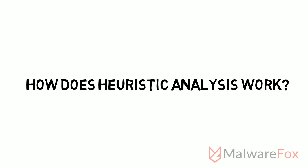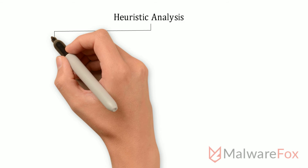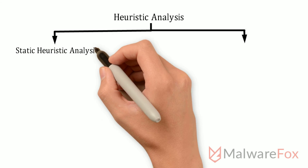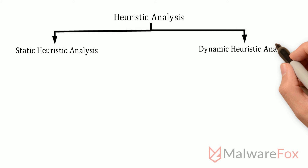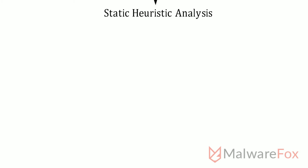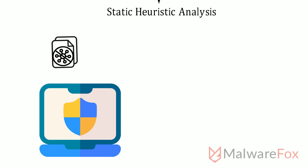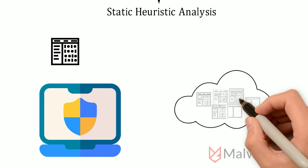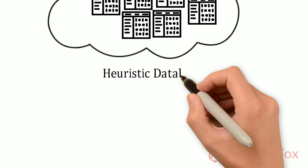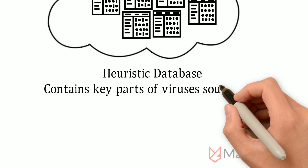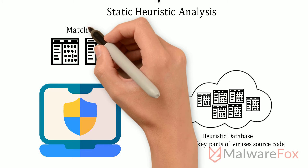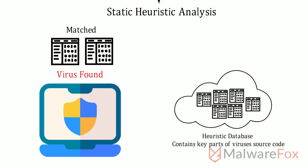How does heuristic analysis work? There are two methods of heuristic analysis that an antivirus could employ: static heuristic analysis and dynamic heuristic analysis. In the static heuristic method, antiviruses decompile the program and test its source code. The source code is matched with the code of already known viruses in the heuristic database. If a predefined part of the source code matches with the heuristic database, the program is considered a threat.